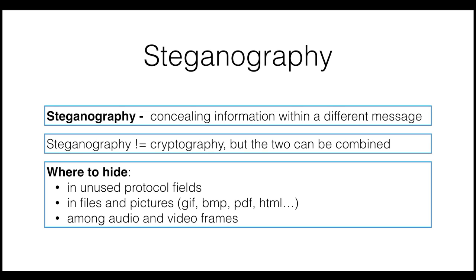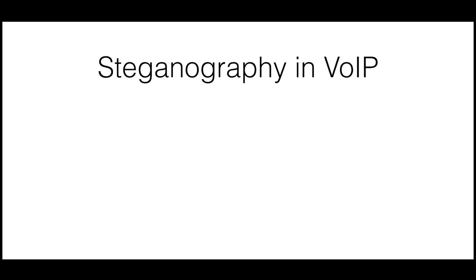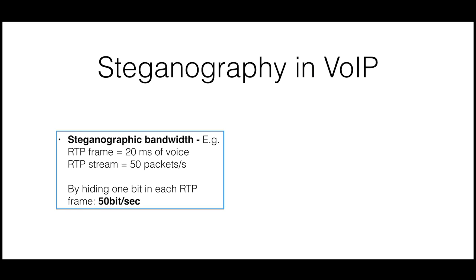Let's have a look at this last example. Voice over IP has been used in several ways for implementing a covert channel. The overall idea is to embed data into a VoIP stream in a way that the overall perceived performance is still good enough for the user not to notice. VoIP is chosen because it uses several protocols, offering more options for hiding information. Also, VoIP can achieve a relatively high steganographic bandwidth — for example, with a VoIP stream of 50 packets per second, you can achieve a bandwidth of 50 bits per second just by adding one bit of information to each frame.